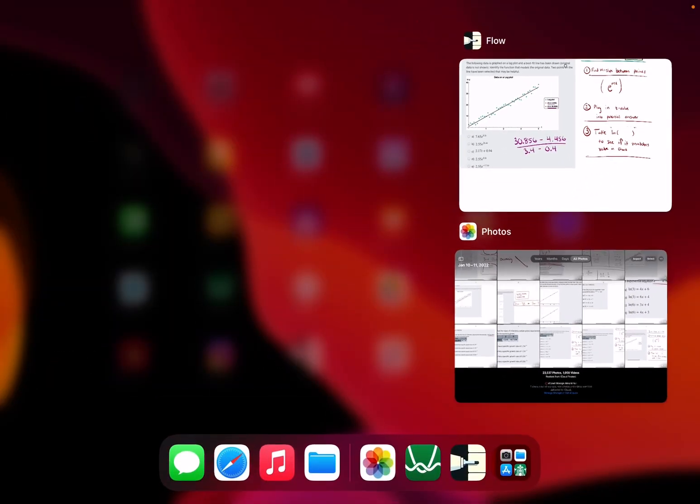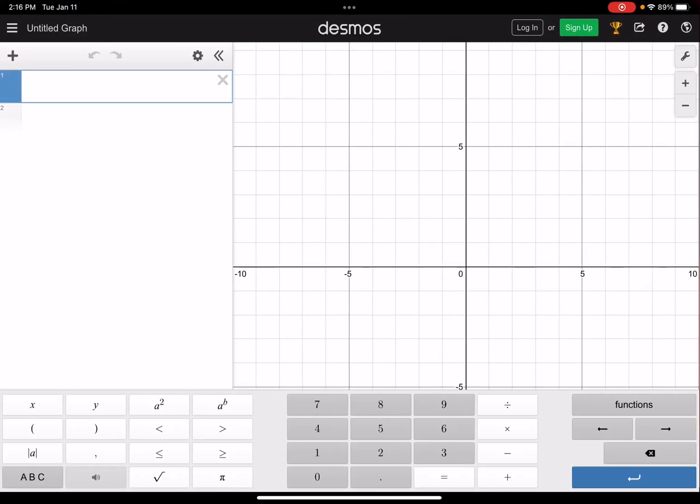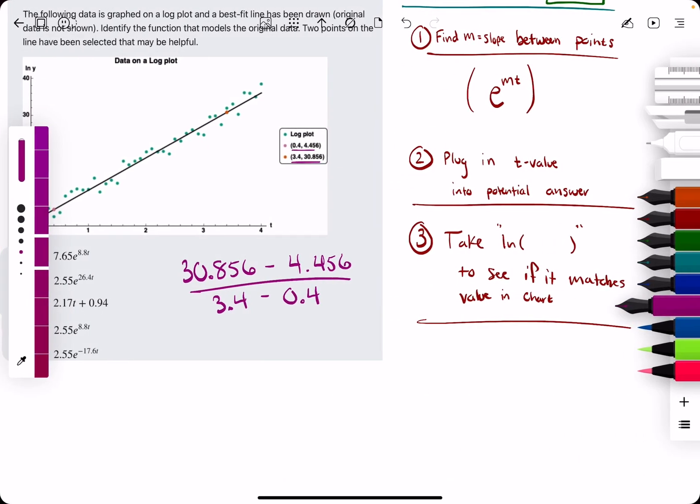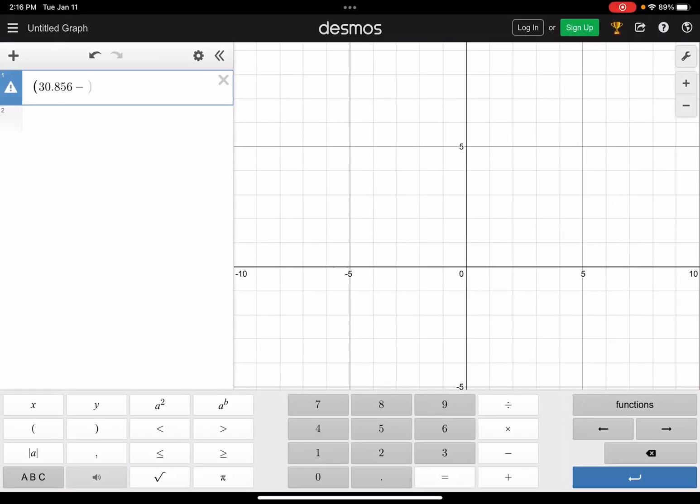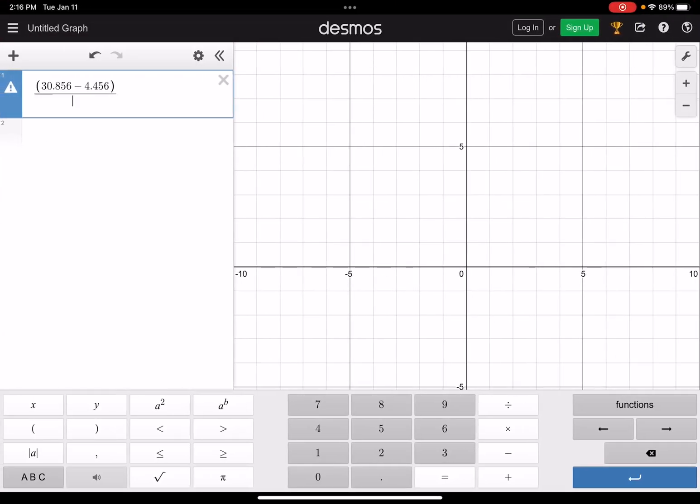In order to find our slope. So let's open up Desmos, and we are calculating 30.856, minus 4.456, and then dividing that by 3.4, minus 0.4. And we get 8.8.